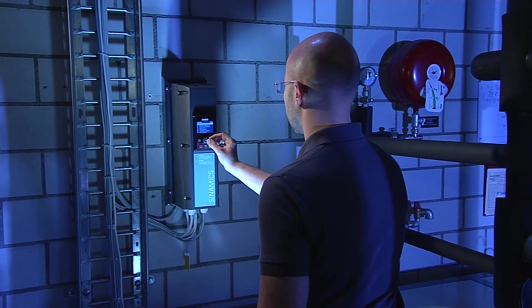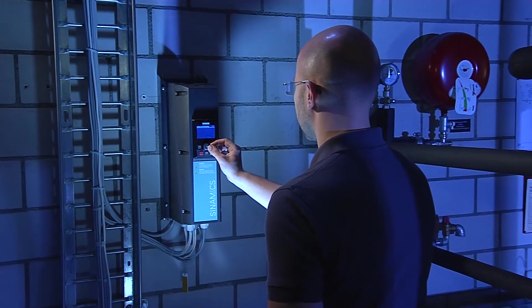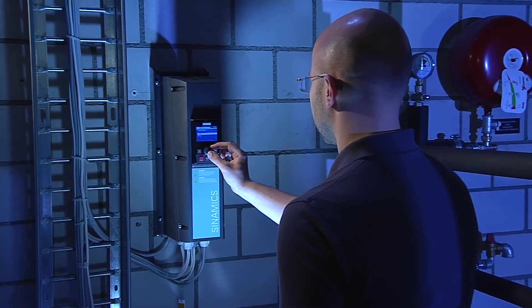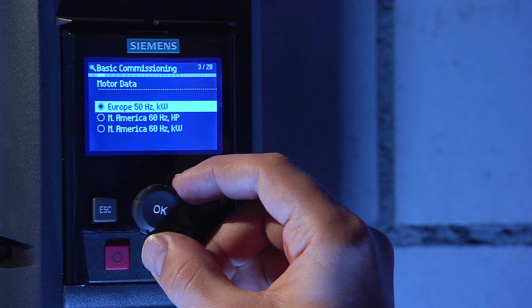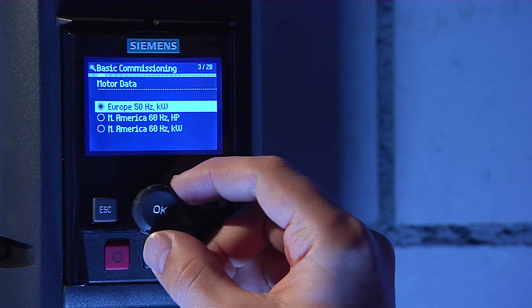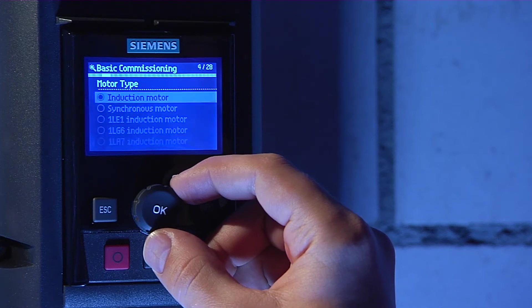Now the IOP asks you which motor data, European or US standard, should be used. Select this based on your supply frequency, that is 50 or 60 Hz. And in the next step, select the motor type you are using.